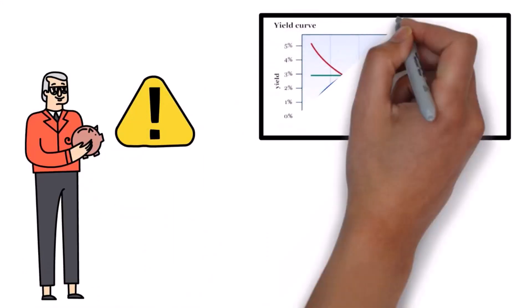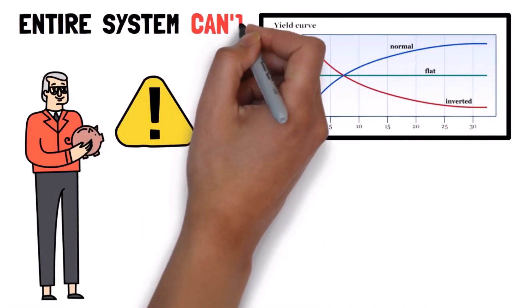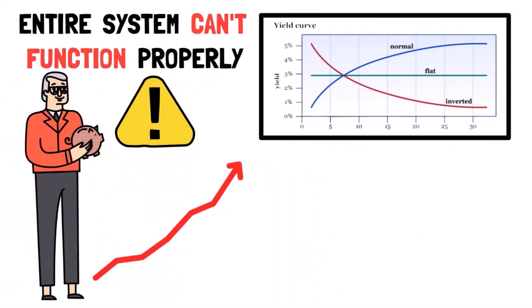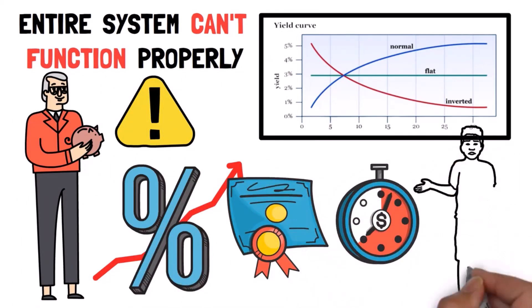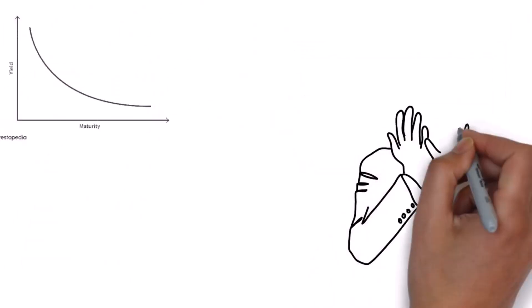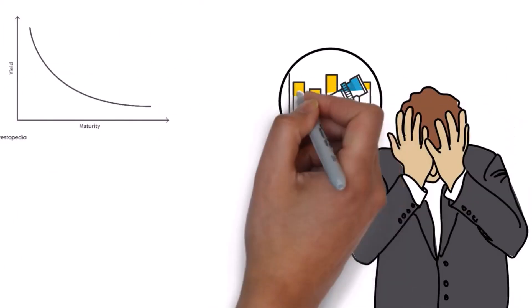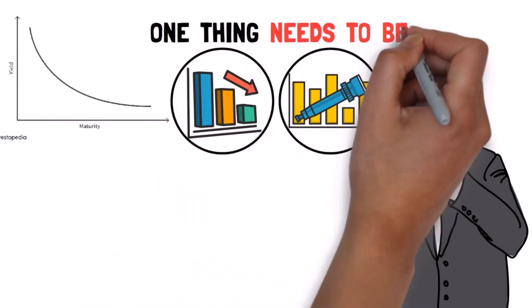It's dangerous when the yield curve starts to invert because when it inverts, the entire system can't function properly, and it would mean you get a higher interest rate if you hold the bond for a shorter period of time, which doesn't make sense. This inversion occurs when investors are very pessimistic about the future and generally believe a recession is coming.